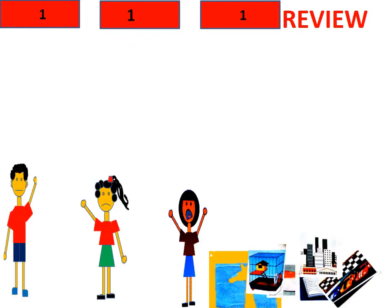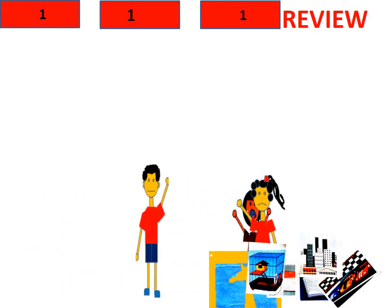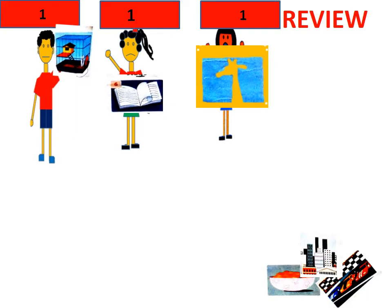Now, let's continue to play this game for the second time, but with words where letter C makes a different sound. One, two, three. Good job. The boys tell me what your picture is about. Cage. Good. How about the girl? Beach. Good. And you? Giraffe. Good. One point for each.